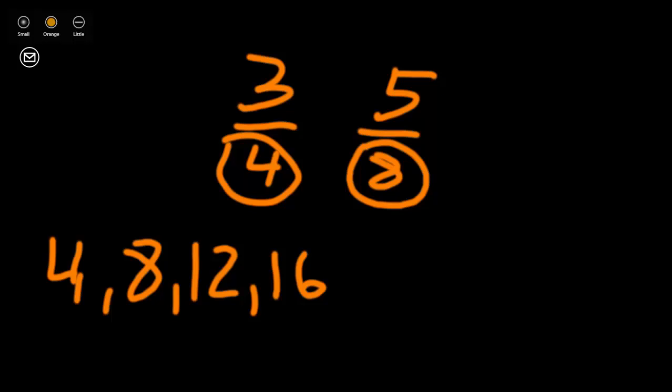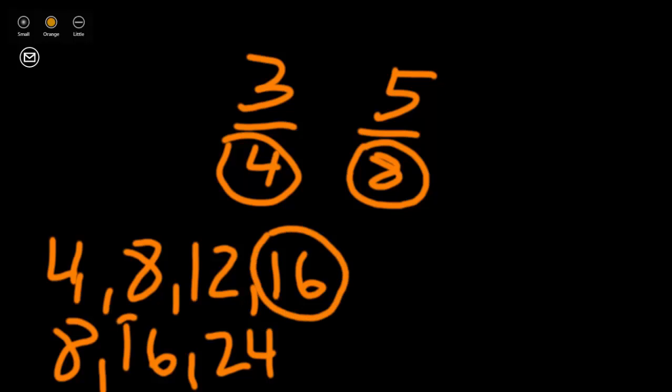So, if we're skip counting by eight, we're listing our multiples. Eight times one is eight. Eight times two is sixteen. Eight times three is twenty-four. Now, we see that we've listed two common multiples of eight, which are both sixteen.